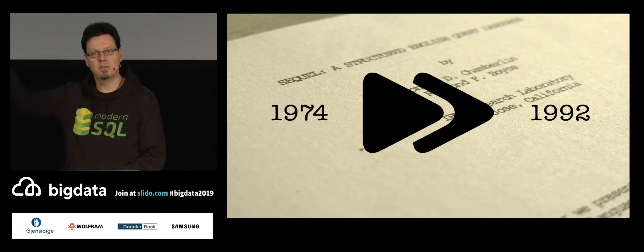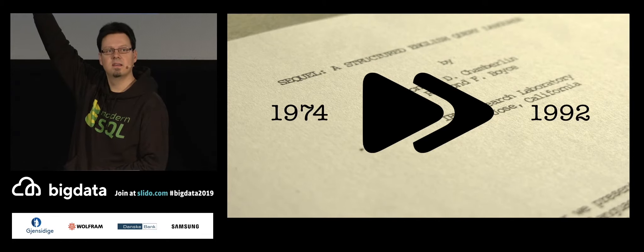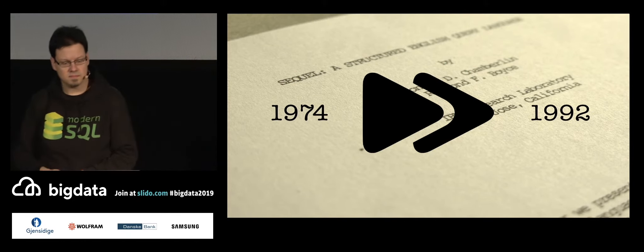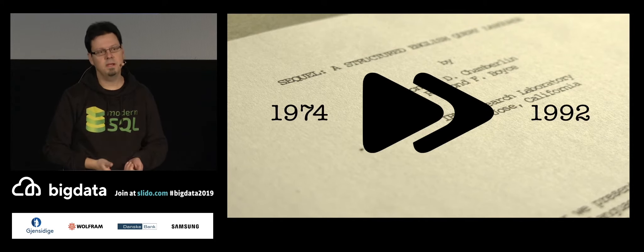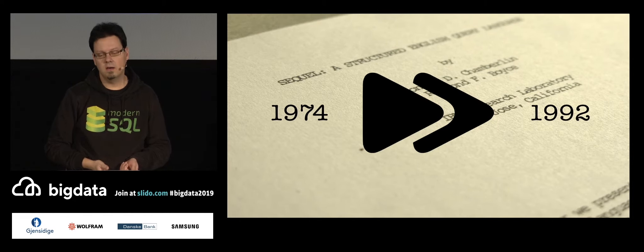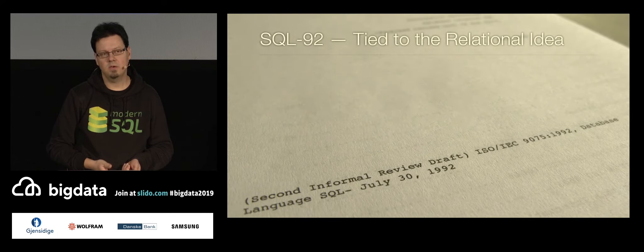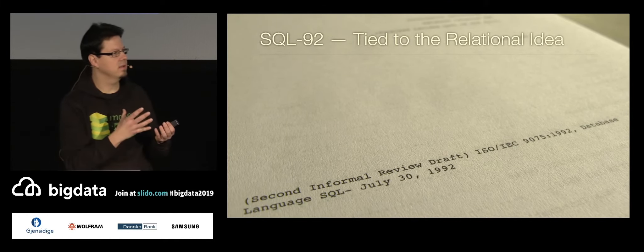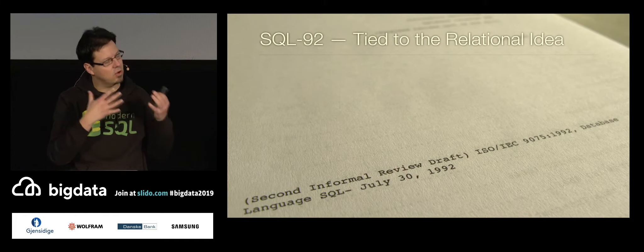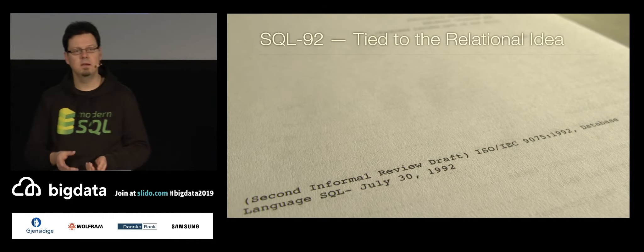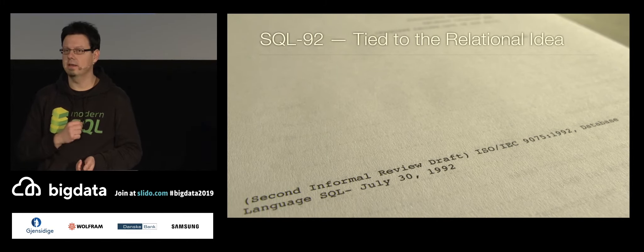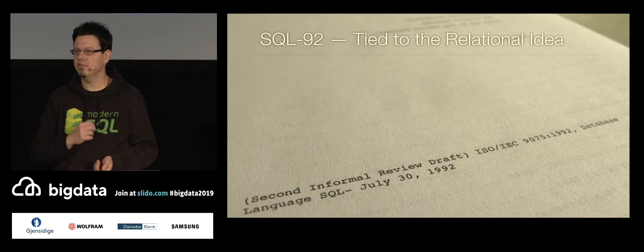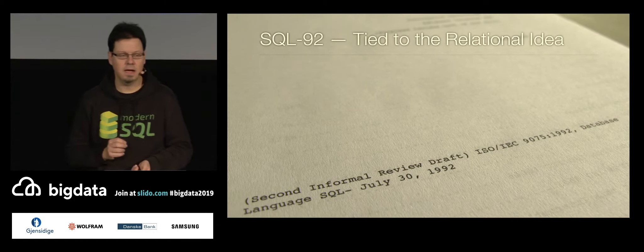In 92 there was a standard release, SQL-92. Has anyone of you ever heard about this SQL-92? Give me a sign. Yeah, quite a few. So what was the big deal about SQL-92? At that time, SQL was kind of complete. It was rounded. It has everything it urgently needed when you just look at the relational idea. And this was a limiting factor at that time, the relational idea.